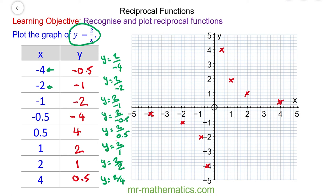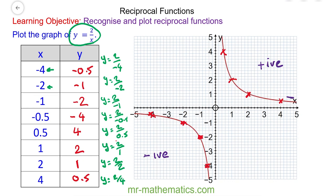Now we are going to have two reciprocal curves — one in the positive first quadrant and one in the negative third quadrant. At this point the value of x will approach infinity, and similarly here where it approaches negative infinity. At these two points we approach positive and negative infinity with y. This means the curve will get infinitely close to the axes but never actually touch them.